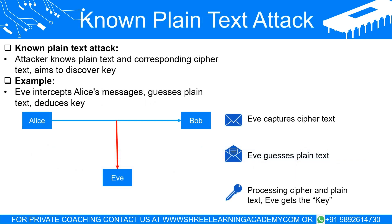In a known plain text attack, the attacker has access to both the plain text (original data) and the corresponding cipher text (encrypted data). By analyzing the relationship between these two, the attacker attempts to uncover the key that was used to transform the plain text into the cipher text.